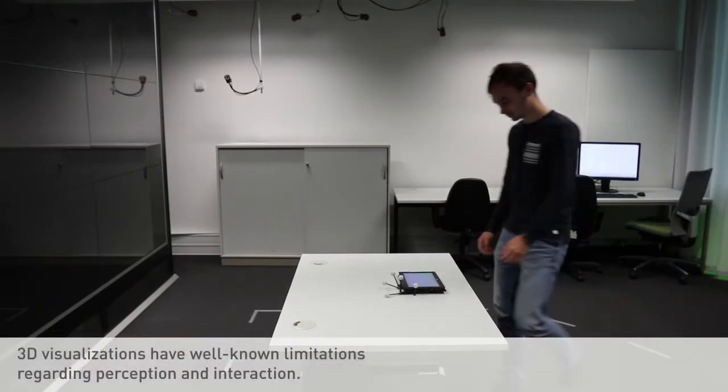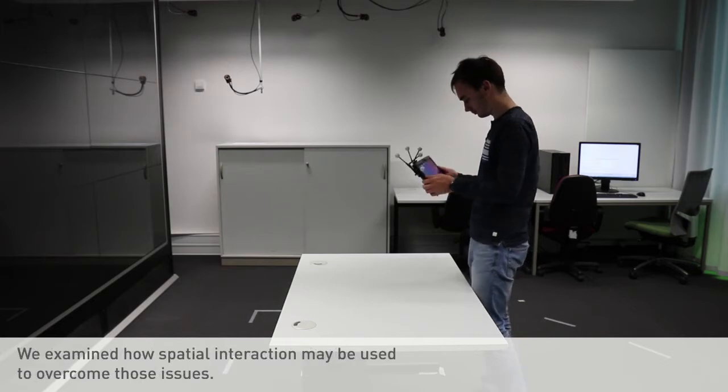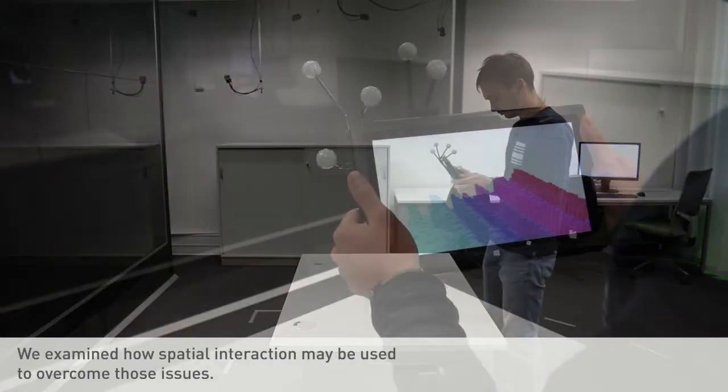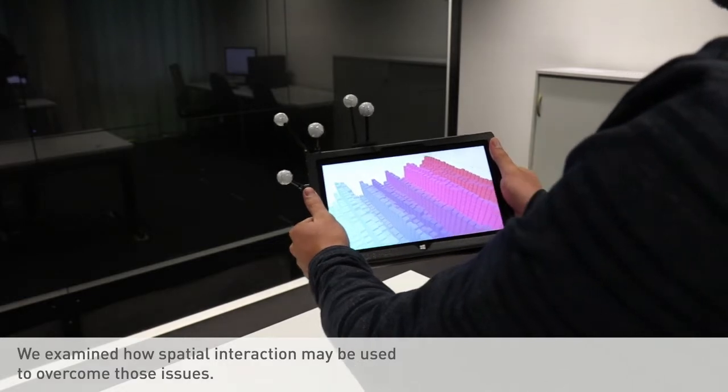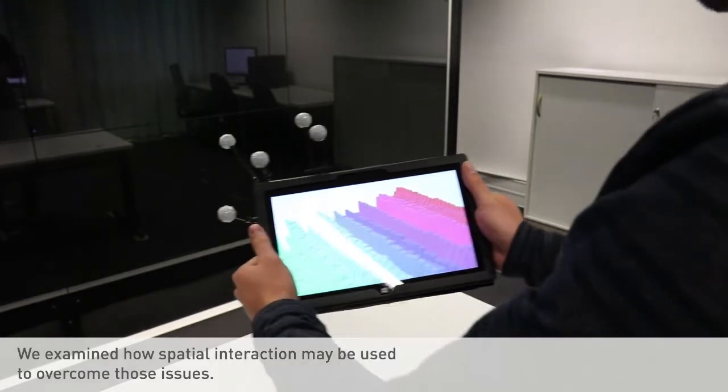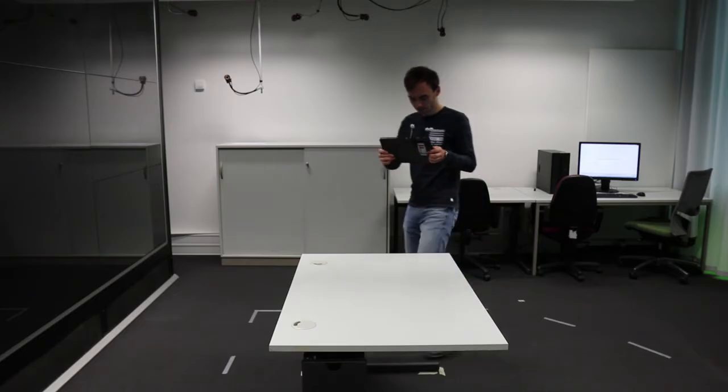3D visualizations have well-known limitations regarding perception and interaction. In this context, we examined the usage of spatial interaction to overcome these issues. We studied the potential of such spatial interaction for in-place 3D visualizations in comparison to classic touch interaction.